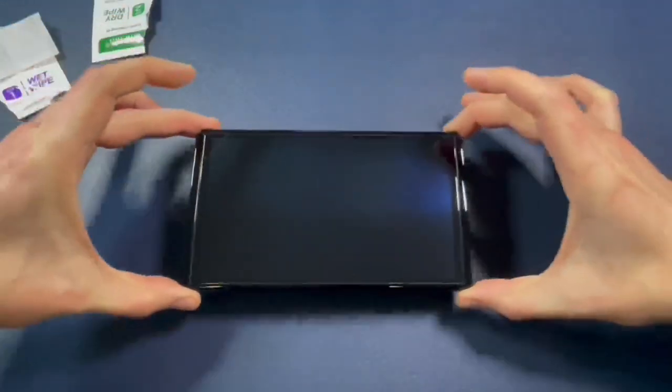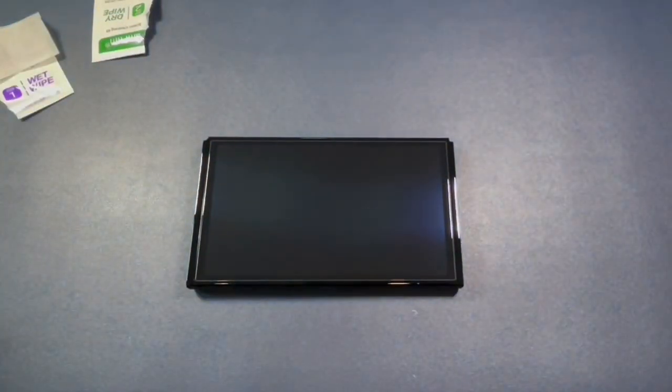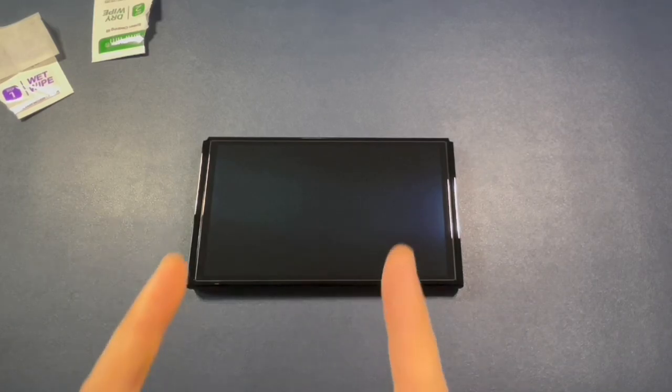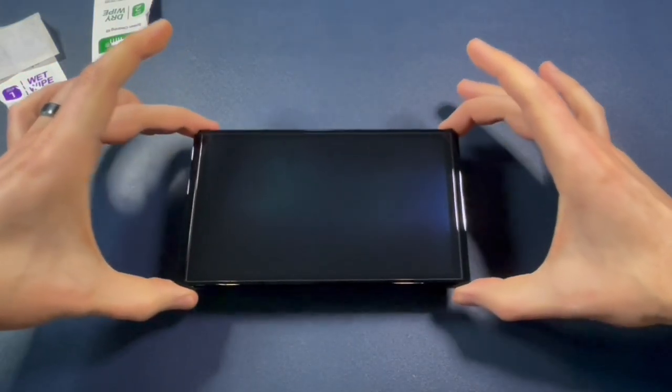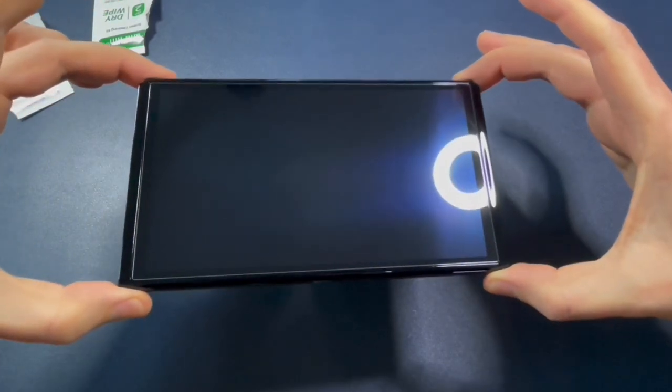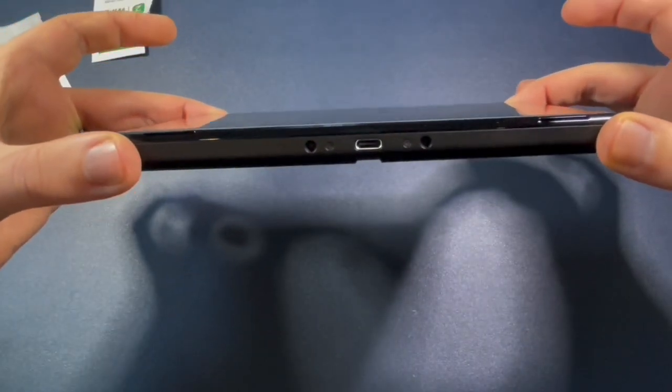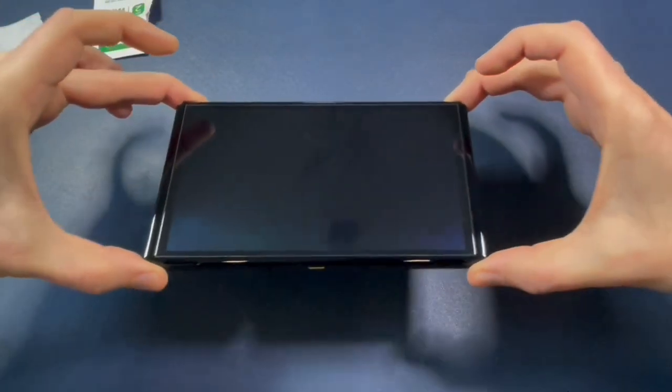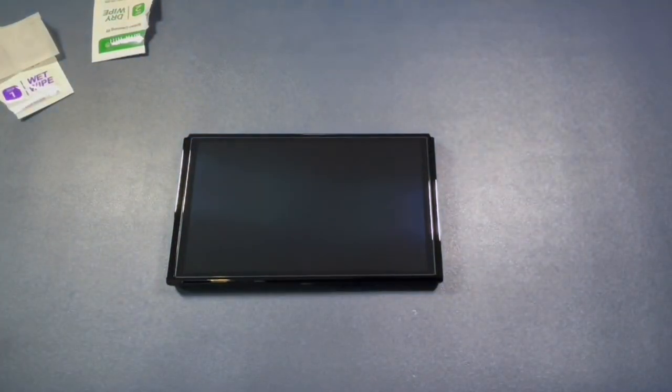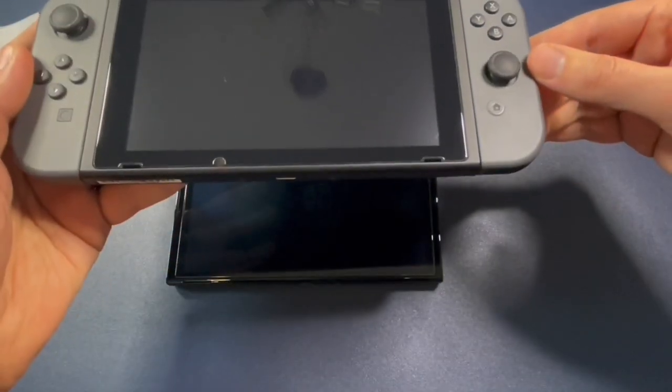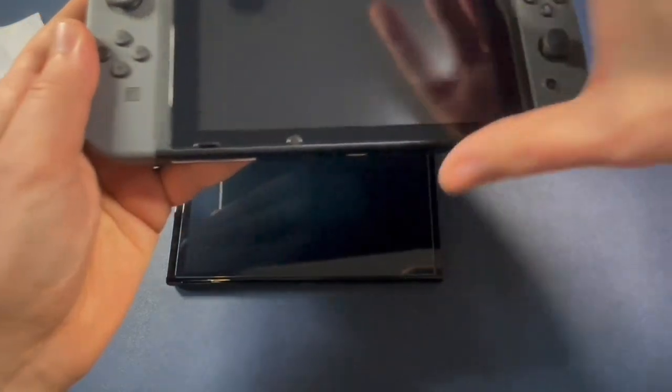So a lot of people have been asking me, do the old, original Nintendo Switch screen protectors work for the Nintendo Switch OLED? The answer is no. It's a different size screen. This is a bigger screen. Also, the speakers are on the bottom of the Nintendo Switch, where the original Nintendo Switch has the speakers on the front. So no, you have to get the new Nintendo Switch OLED screen protectors. And we'll have the Amazon links down below.